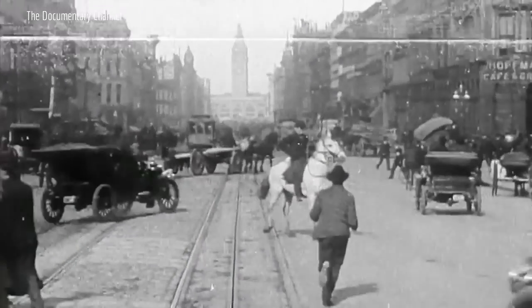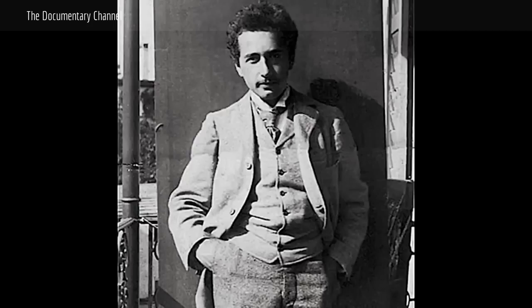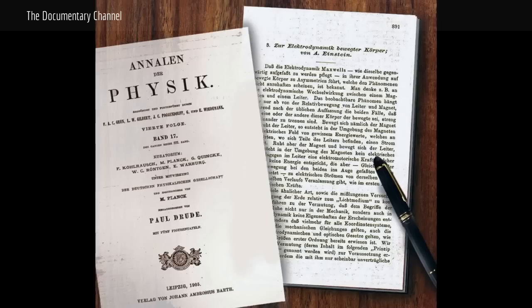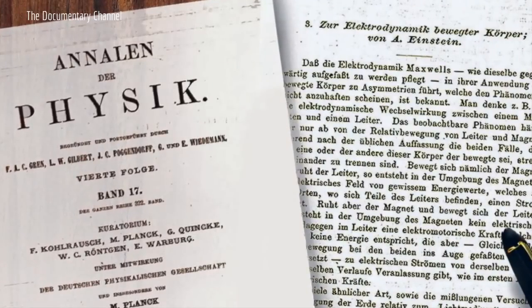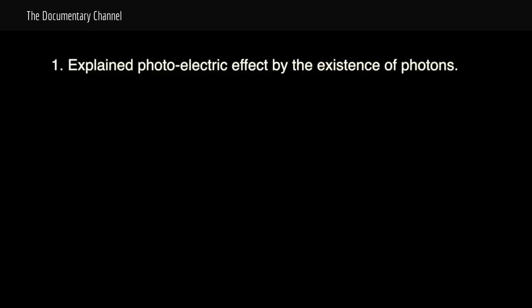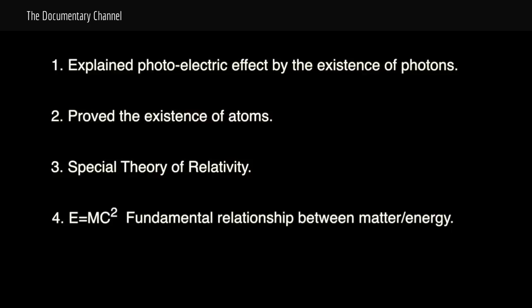In 1905, horses still mingled with cars in the street, Ty Cobb was a major league rookie, and Albert Einstein was a low-ranking clerk in the Swiss patent office. That year, in his spare time, he wrote four remarkable scientific papers. The first established the photon as the particle associated with light, overturning many years of understanding light as a purely wave-like phenomenon, and he used this to explain the photoelectric effect. In another paper, he mathematically proved the existence of atoms and calculated their size. He introduced his special theory of relativity, which describes how motion can affect the passage of time. And then, with E equals mc squared, he established the fundamental relationship between matter and energy — explaining what makes the sun shine.